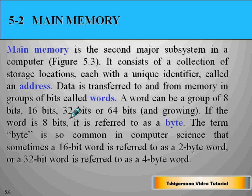The main memory is the second major subsystem in a computer. It consists of a collection of storage locations, each with a unique identifier called an address. Data is transferred to and from memory in groups of bits called words.